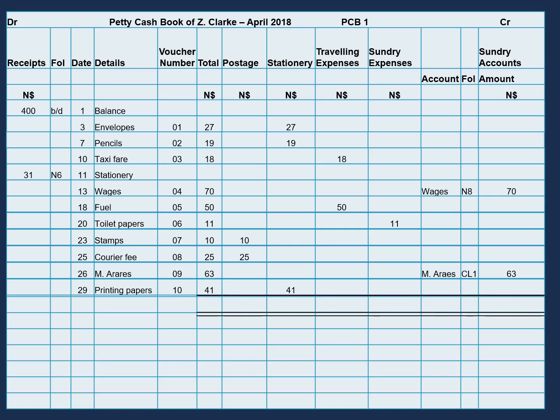First, we need to add up all the totals. So that means the total for the total column, the total for the postage column, the total for the stationary column, and so forth. Now let's go ahead and do that.